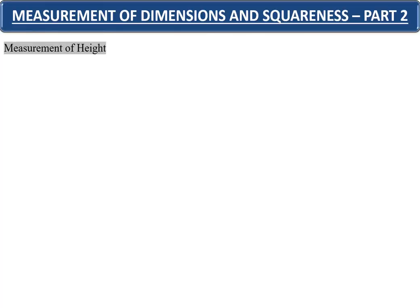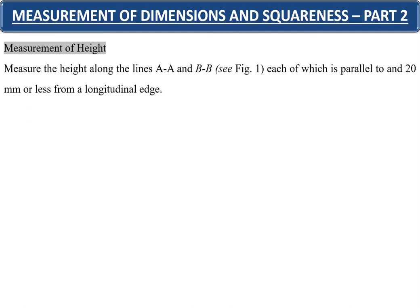The first part is measurement of dimensions and squareness as detailed in IS 4020 part 2. Measurement of height is along the line AA and BB as shown in the photograph, each of which is parallel to and 20 millimeters or less from a longitudinal edge. The height shall be measured with an accuracy of 1 millimeter.